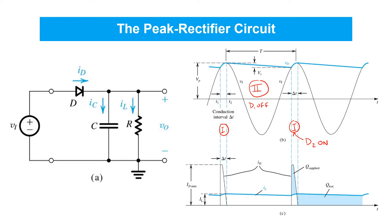The diode current arises only in this narrow conduction interval and results in a very large spike of current through the diode. If you integrate the area under a current waveform versus time, you end up with the total amount of charge that's conducted during that time interval. So when the diode's off, all the current through the load resistor is coming from the capacitor C, representing all the charge that's lost each cycle. In steady state, the current supplied during the narrow conduction interval must exactly equal the charge that's lost during the rest of the cycle, meaning the areas of these two shaded regions have to be the same.